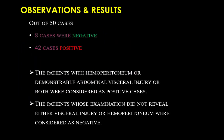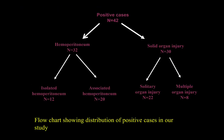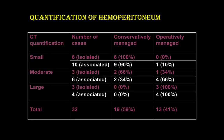Coming to observations and results: out of 50 cases, 42 were positive and 8 were negative. Positive indicates hemoperitoneum or organ injury; negative indicates no organ injury and no hemoperitoneum. Of the 42 positive cases, hemoperitoneum was seen in 32. Isolated hemoperitoneum was seen in 12 cases; hemoperitoneum associated with organ injury in 20 cases. Solid organ injury was seen in 30 cases, isolated solid organ injury in 22 cases, and multiple organ injuries in 8 cases. For hemoperitoneum quantification, 16 cases were small — about 90% managed conservatively. Moderate and large cases were managed conservatively in 60 to 70%, with 10 to 20% managed operatively.